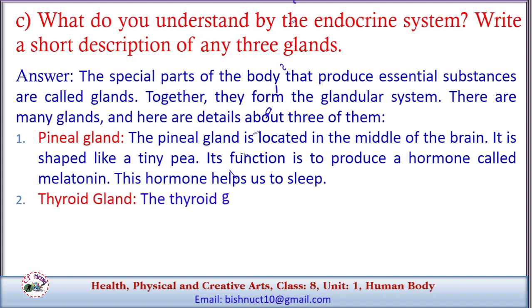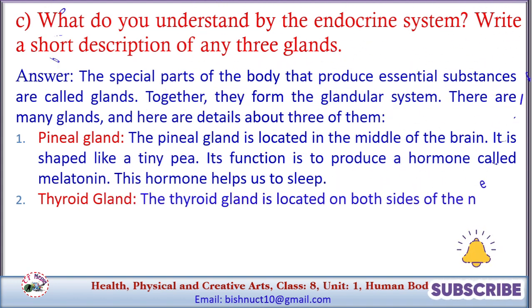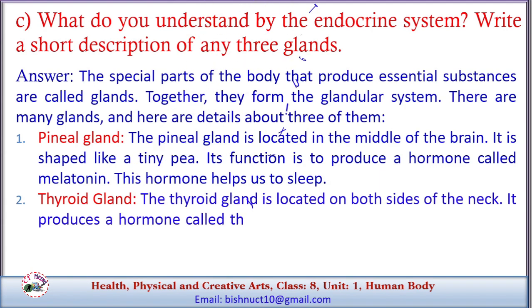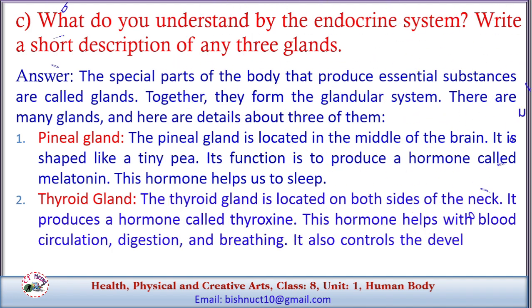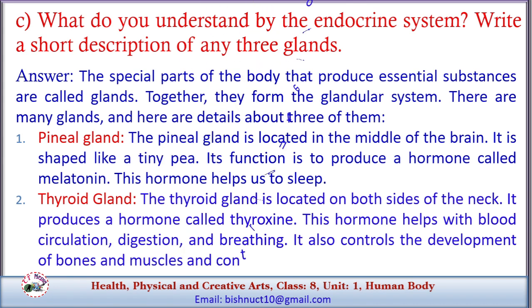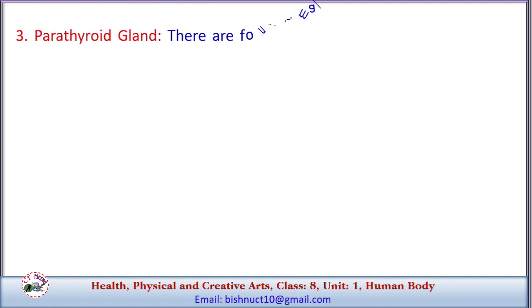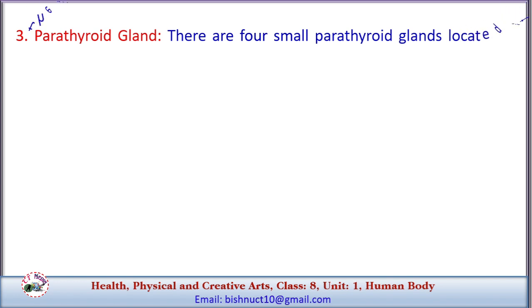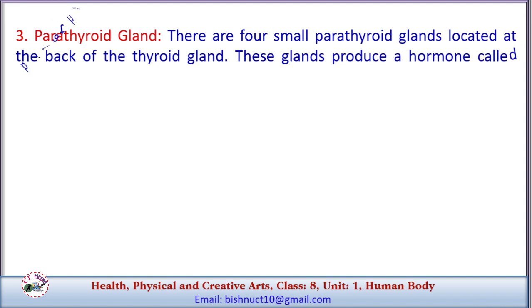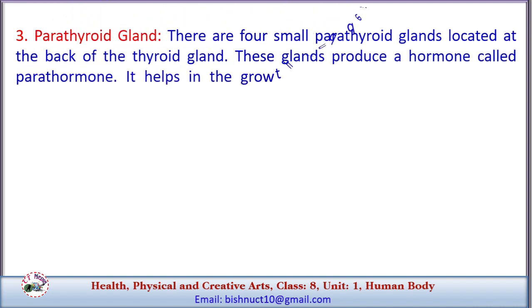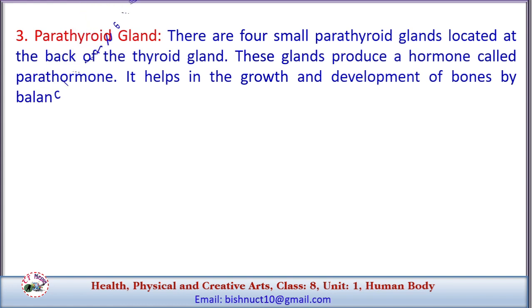2. Thyroid gland: located on both sides of the neck. It produces a hormone called thyroxine. This hormone helps with blood circulation, digestion, and breathing. It also controls the development of bones and muscles and contributes to mental development. 3. Parathyroid gland: there are four small parathyroid glands located at the back of the thyroid gland. These glands produce a hormone called parathormone, which helps in the growth and development of bones by balancing calcium and phosphorus in the body.